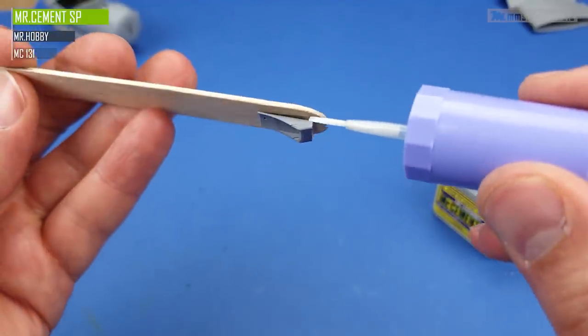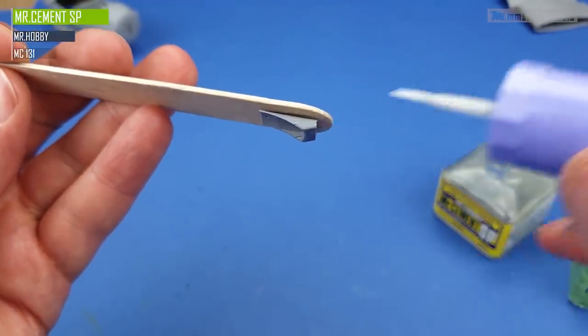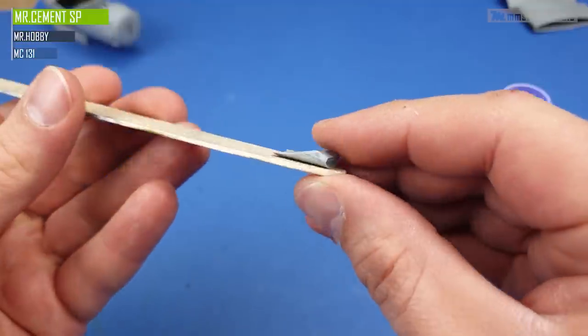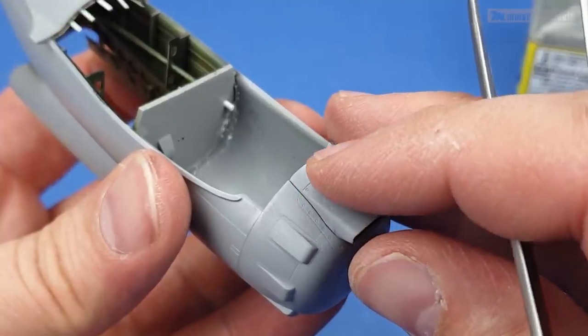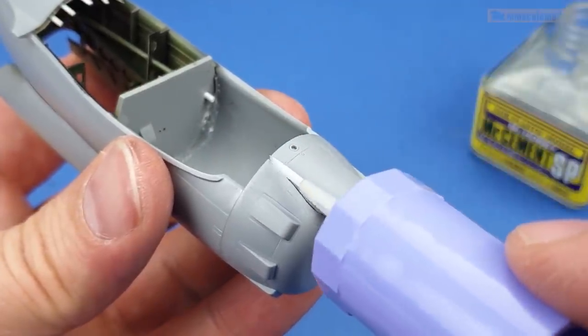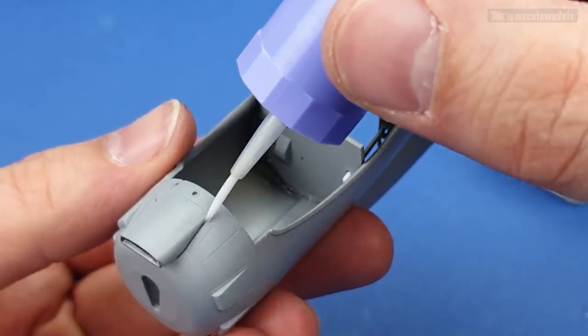The top mounted air scoop had some ejector marks which I had to fill and sand, only to figure out that the scoop opening will be covered by the engine cowling. Sometimes it pays off to check the instructions every now and then. After I glued the intake on the nacelle I started messing around with the surface textures.